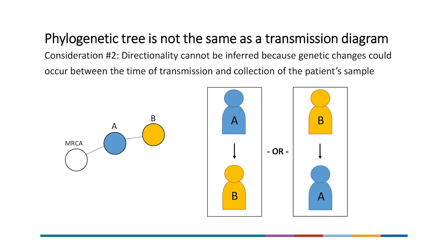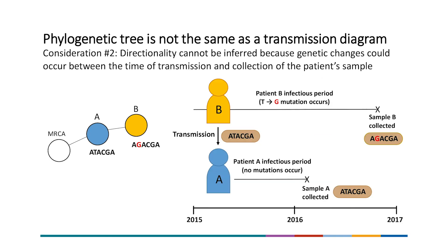Another consideration is that there could be genetic changes that occur between the time of transmission and collection of the patient's sample. It is tempting to think that patient A transmitted to patient B since isolate B is shown to have evolved from isolate A, but it is actually still possible that patient B transmitted to patient A. To illustrate: patient B could transmit to patient A in 2015, so both patients have the same genome type in 2015. Patient A's sample is collected about one year later with no mutations, while patient B's sample is collected even later — during that time, patient B could have a mutation, for example a T to G, in his infecting strain, which would result in a tree that looks like B evolved from A. For these reasons, we don't use the trees to try to infer transmission between patients.